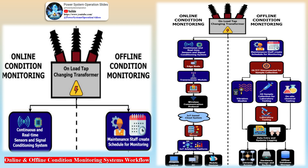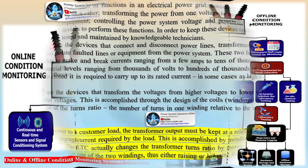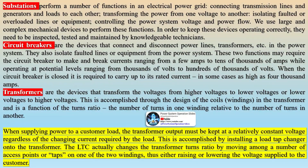In some aspects an LTC is similar to a circuit breaker: it makes and breaks load current while operating at high voltage, and it is required to carry the current being supplied by the transformer to the load. One of the main differences between an LTC and a circuit breaker is the number of operations required. While most circuit breakers may perform a few hundred opening and closing operations in 20 years, an LTC may be required to change taps a few hundred times per week.